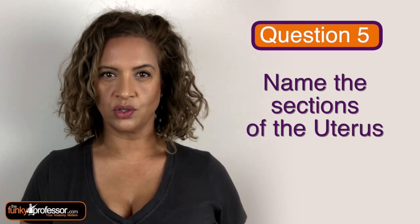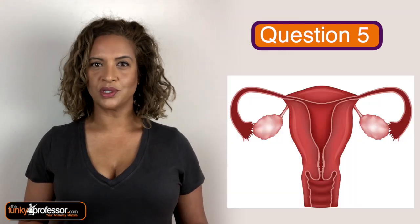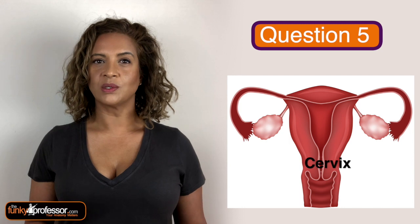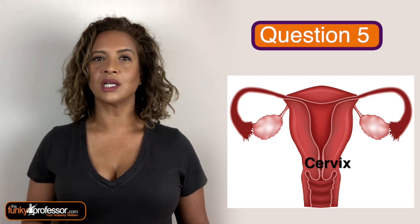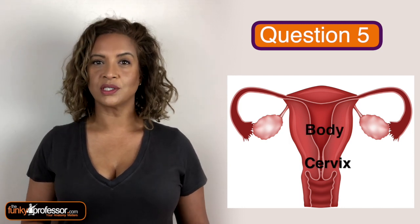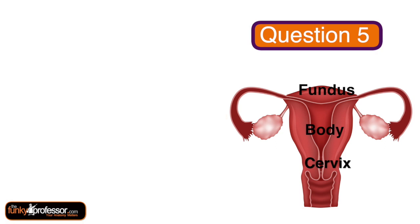Number 5 was: could you name the sections of the uterus? There are 3 main parts of the uterus: the cervix, which leads onto the vagina; the body of the uterus; and the fundus of the uterus. So that's the cervix, the body, and the fundus.